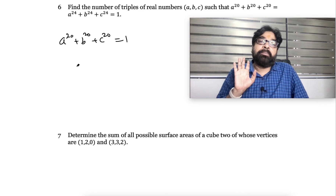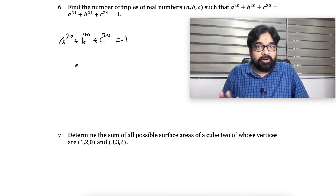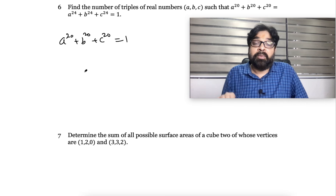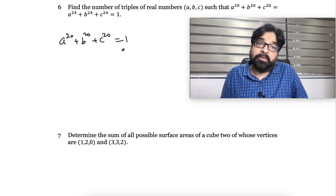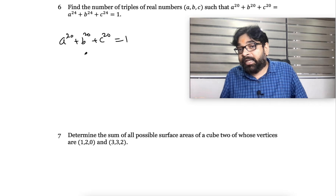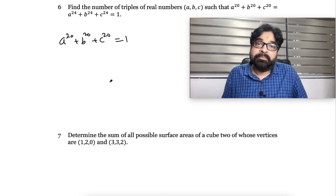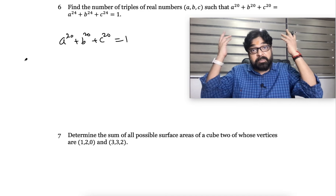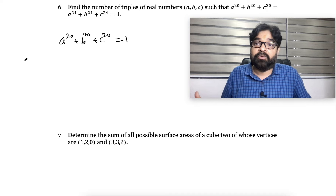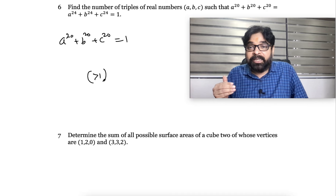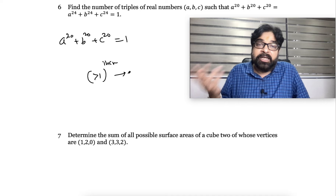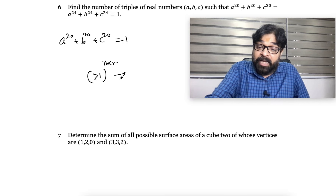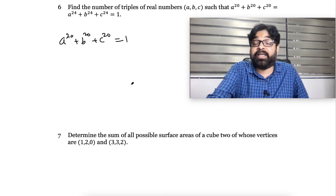First thing: A cannot be bigger than 1, B cannot be bigger than 1, and C also cannot be bigger than 1. Why? Otherwise the sum cannot equal 1 — the sum has to be 1. And they also cannot be less than negative 1, because otherwise the sum cannot be 1. If A is bigger than 1, then A²⁰ will be much much bigger than 1, because when a number greater than 1 is raised to a high power, the value increases very rapidly. So if this equals 1 — and also, if this is the only condition, we cannot guess the answer directly.